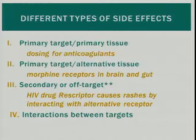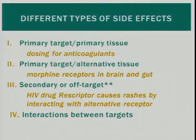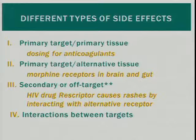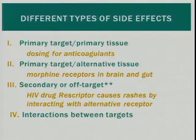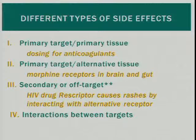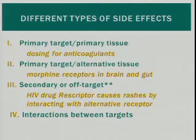If we think about side effects in terms of a drug interacting with receptors, we can classify them in a couple of ways. The first is the drug interacting with the primary target in the primary tissue — rather than having the intended therapeutic effect, there's too much or too little, such as the narrow therapeutic window for anticoagulants. Another class is when the drug interacts with the primary target but that target is present in a different tissue — for example, morphine acts on receptors in our brain for pain-killing, but similar receptors in our gut can cause constipation.